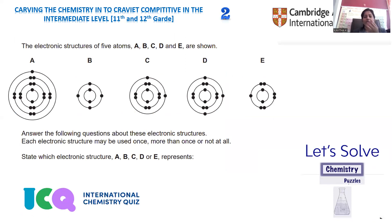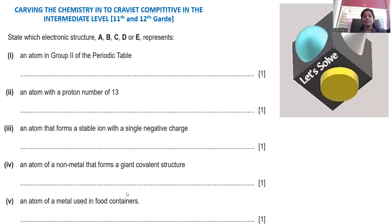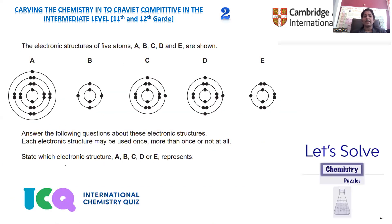Move on to the second question. This is taken from the Cambridge Assessment International Education. The electronic structure of five atoms A, B, C, D, E are provided. Based on these electronic configurations, we need to give answers for five questions.